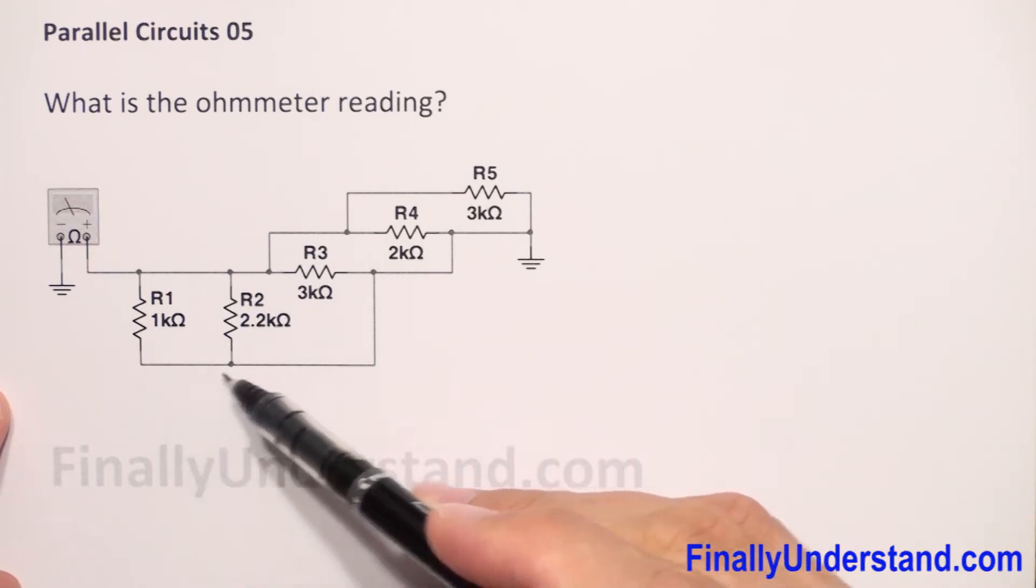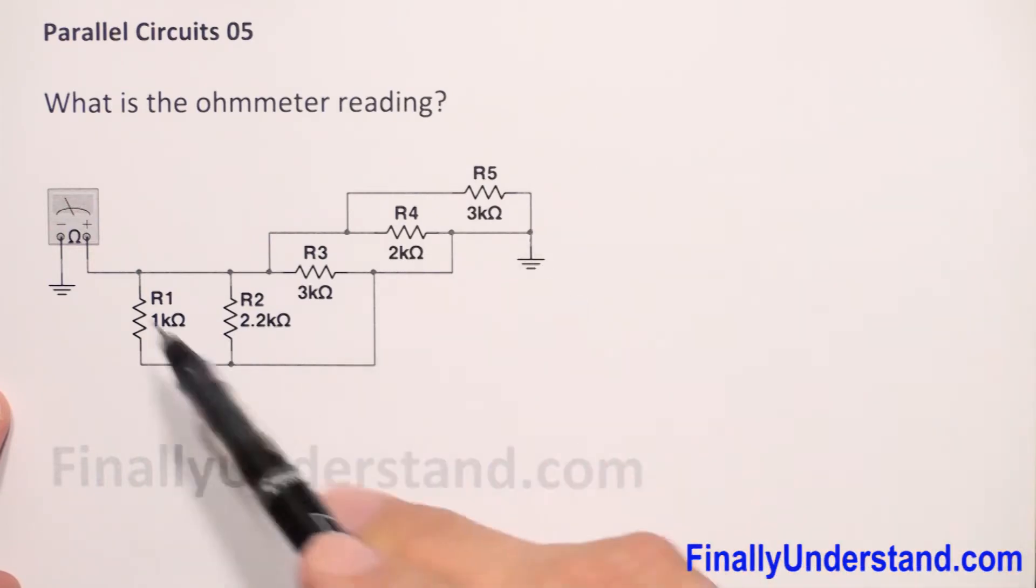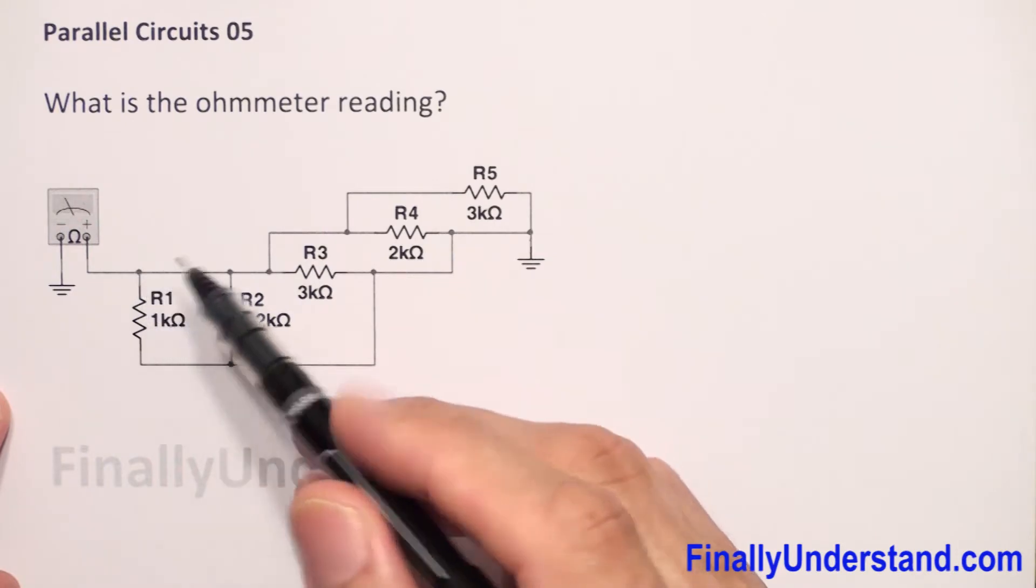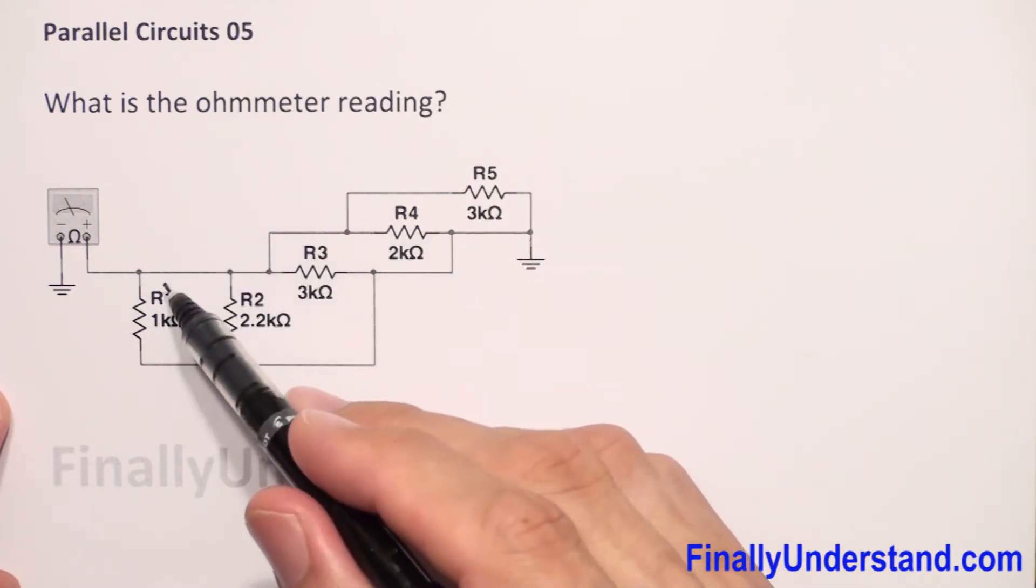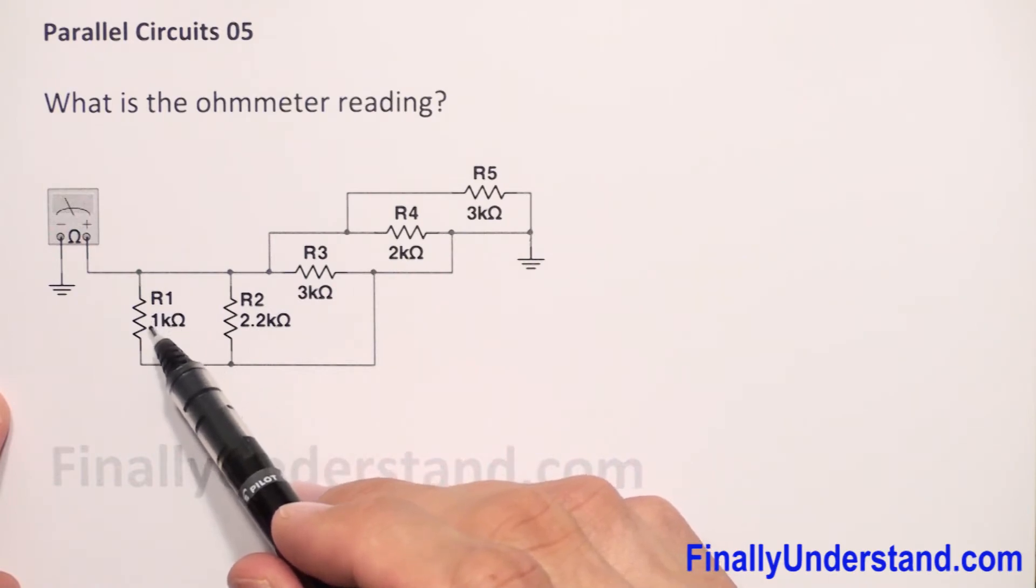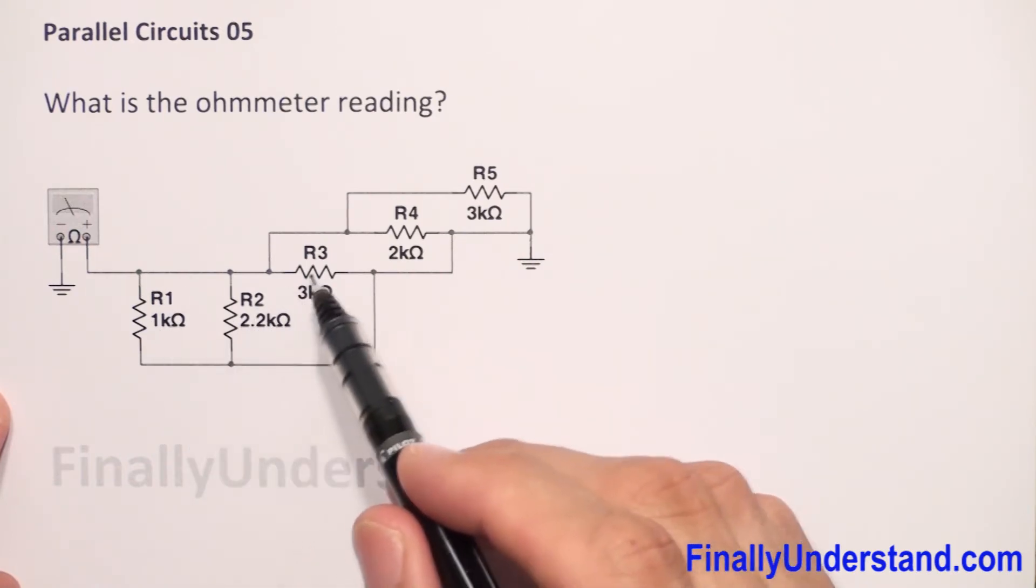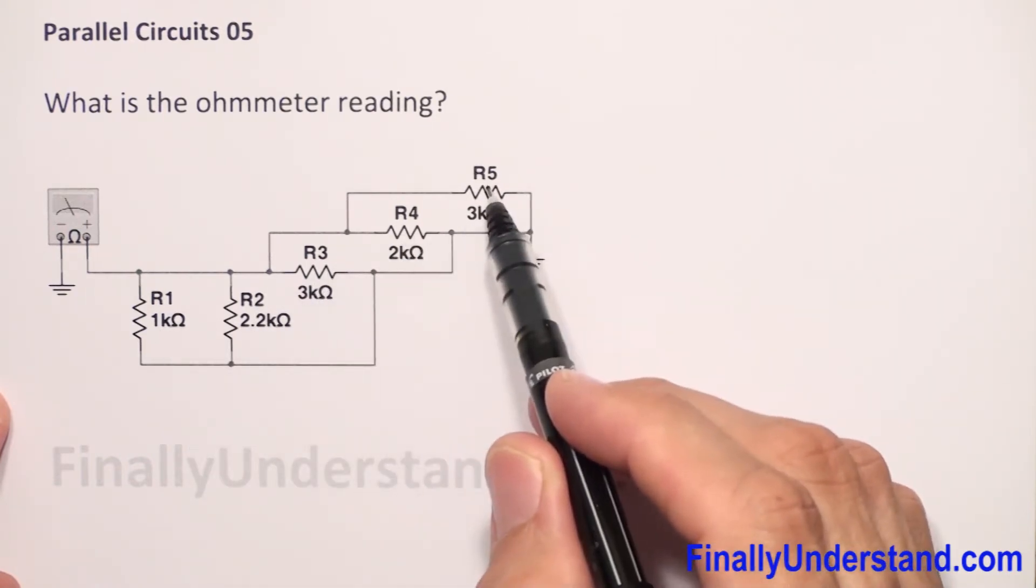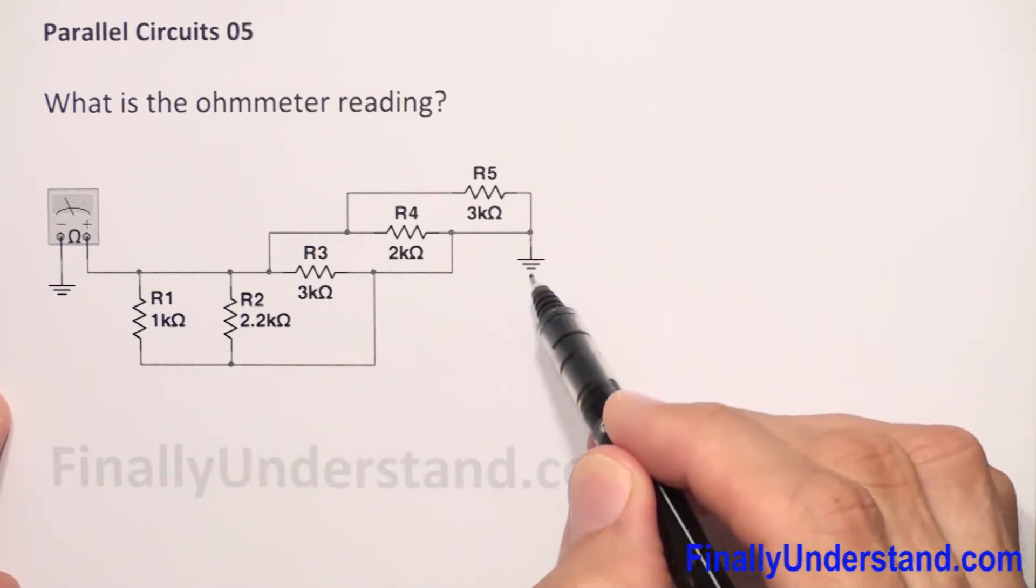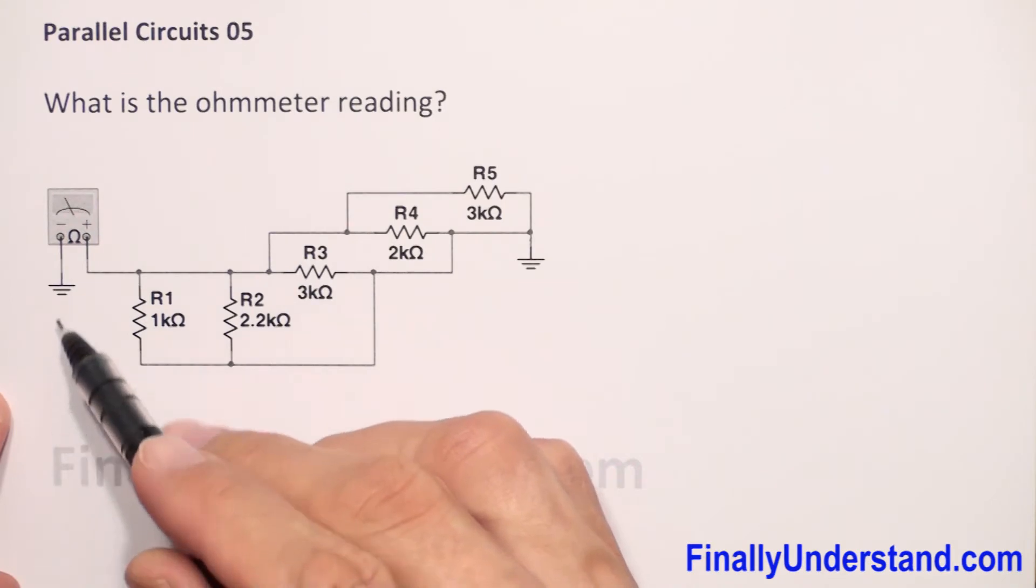The rest of them are connected to the ground, and we have ground over here, right? So it means the current is going to flow from the ohmmeter to all of them and split into five different currents which will go through R1, R2, R3, R4, and R5. Then by the ground, it's going to get back to the ohmmeter.